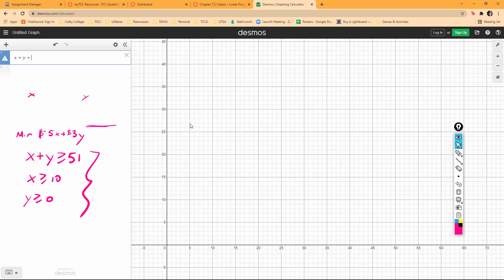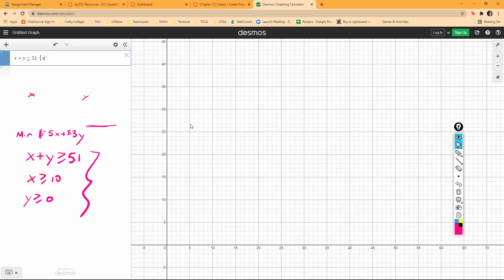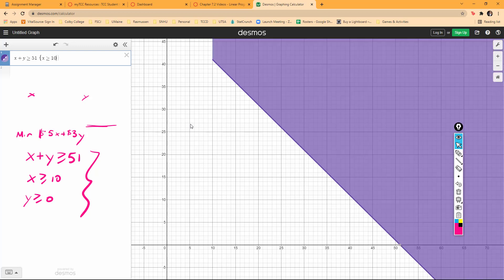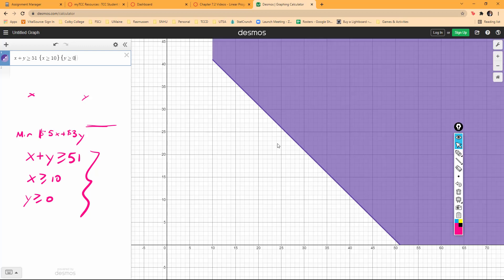So X plus Y greater than or equal to 51. Then I want to constrain my X greater than or equal to 10. And I also want to put a constraint on my Y greater than or equal to zero.